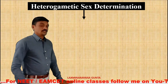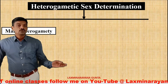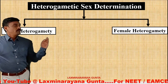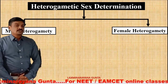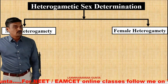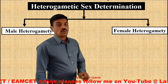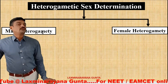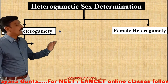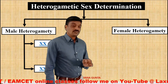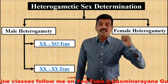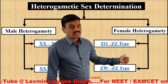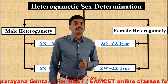Heterogametic sex determination is divided into two types: male heterogamety and female heterogamety. In male heterogamety, the males have two dissimilar sex chromosomes. In female heterogamety, the females have two dissimilar sex chromosomes. Male heterogamety includes XX/X0 type and XX/XY type of sex determination. Female heterogamety includes Z0/ZZ type and ZW/ZZ type of sex determination.